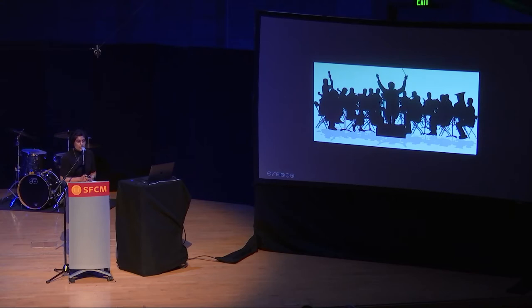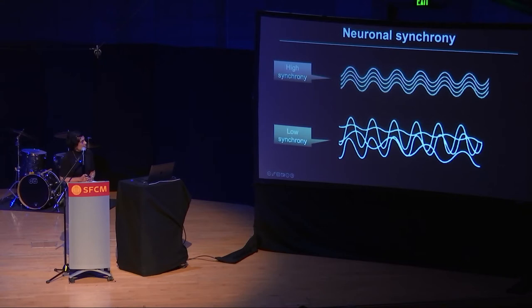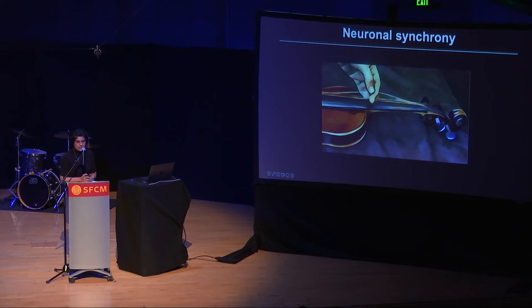So when neurons fire together, the synchrony is high. When they fire at random, the synchrony is low. But just like in an instrument, we have to have the perfect tuning for the best cognition and behaviour to manifest. It shouldn't be too high or too low.